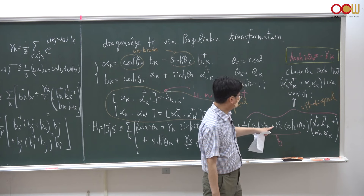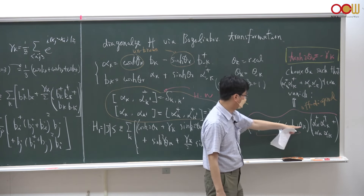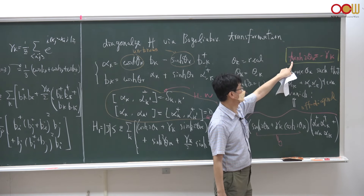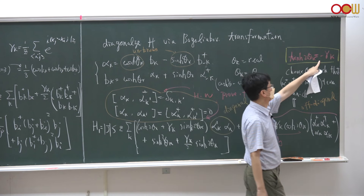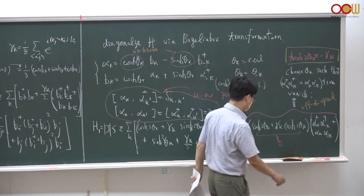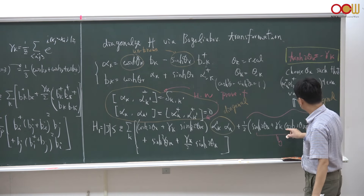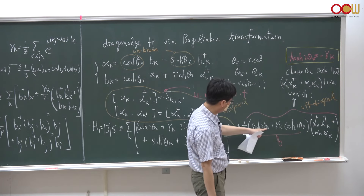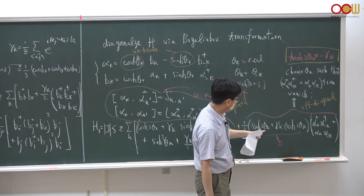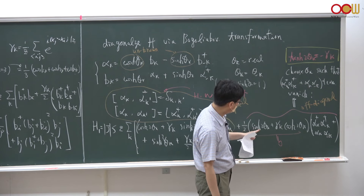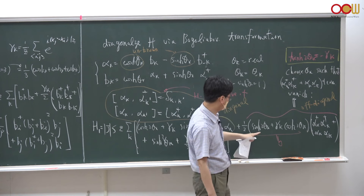This is the Bogoliubov transformation. The purpose is to rewrite H1 in a diagonal basis — in terms of alpha-dagger alpha — by demanding the off-diagonal term vanish. Since theta_k can be anything, we can specifically demand the b-dagger b-dagger and b-b terms vanish by fixing theta_k such that this term is zero. The condition to suppress the off-diagonal term is that tanh(2*theta_k) = minus gamma_k.